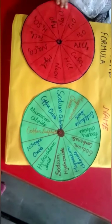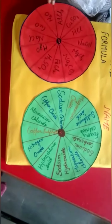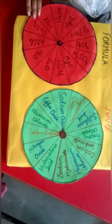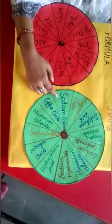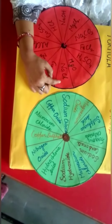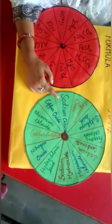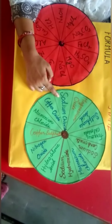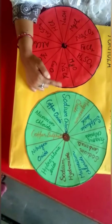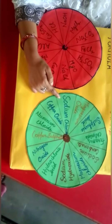The student rotates this disc and finds the formula of sodium chloride. Here is the sodium chloride, and they come opposite to each other. The chemical formula and chemical name come opposite to each other, and we say the student is correct.